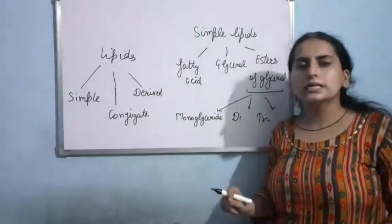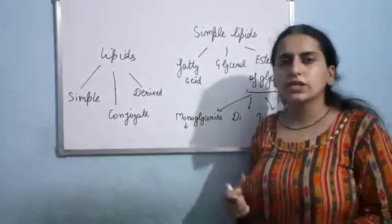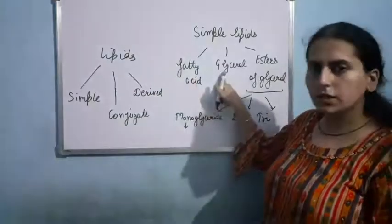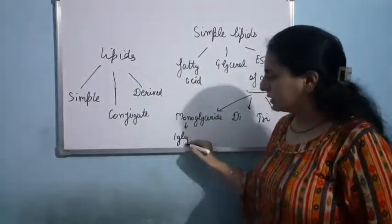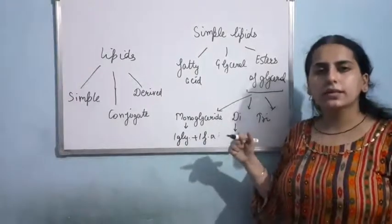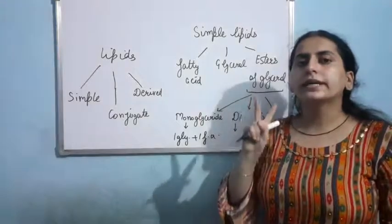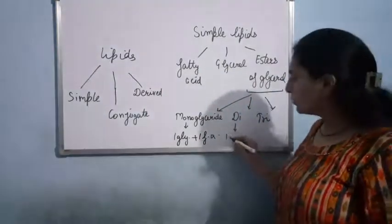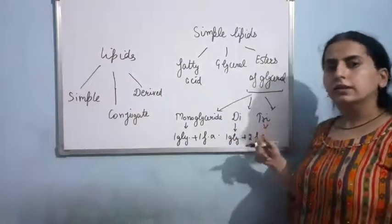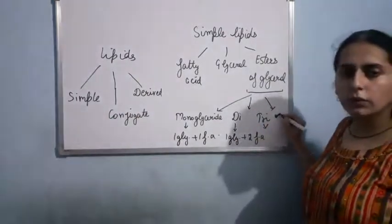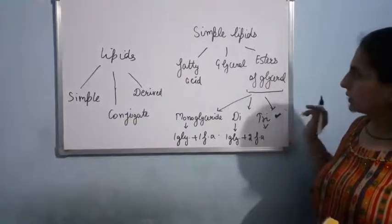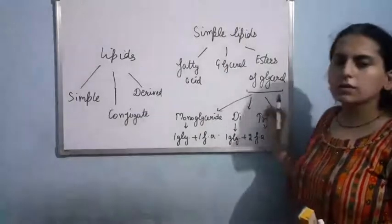Monoglycerides are formed by esterification between one glycerol and one fatty acid. Diglycerides are formed by esterification between one glycerol and two fatty acids. Triglycerides are formed by esterification between one glycerol and three fatty acids. Let me draw the structure of triglyceride, after which simple lipids will be completed.